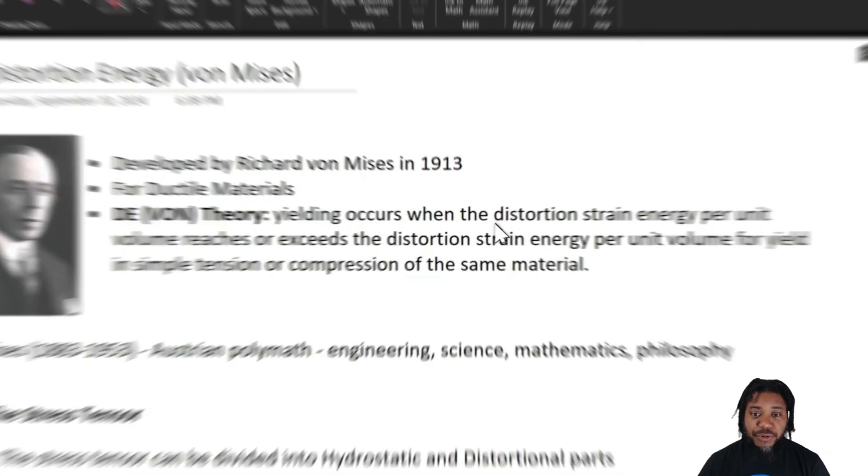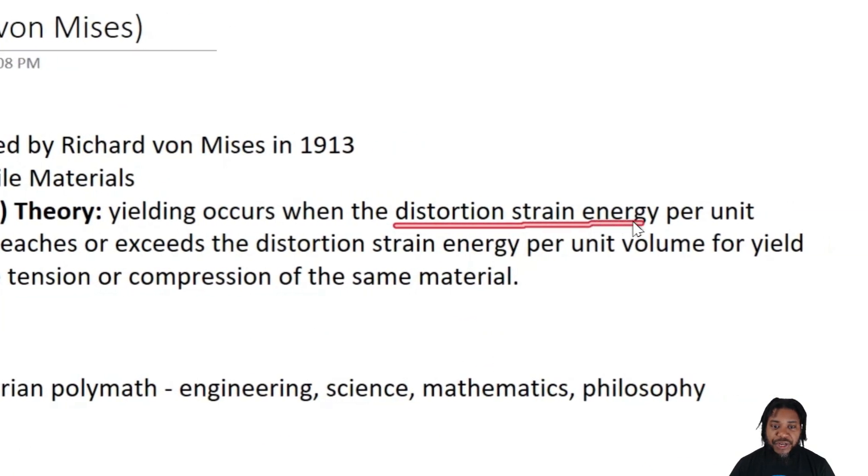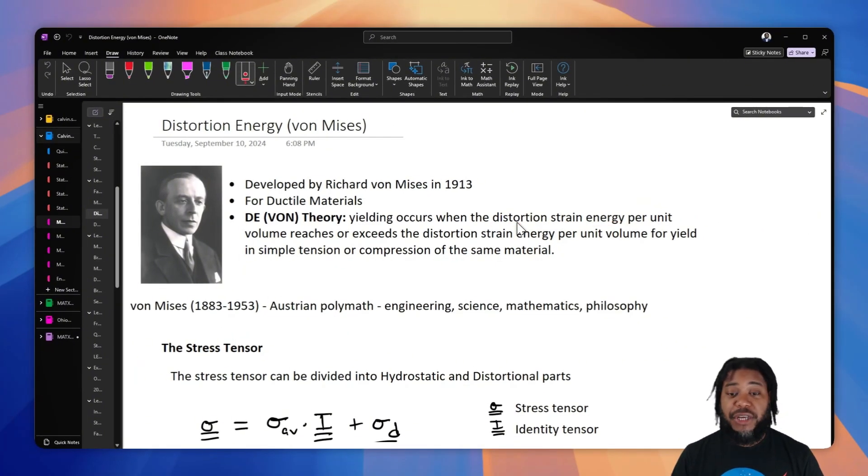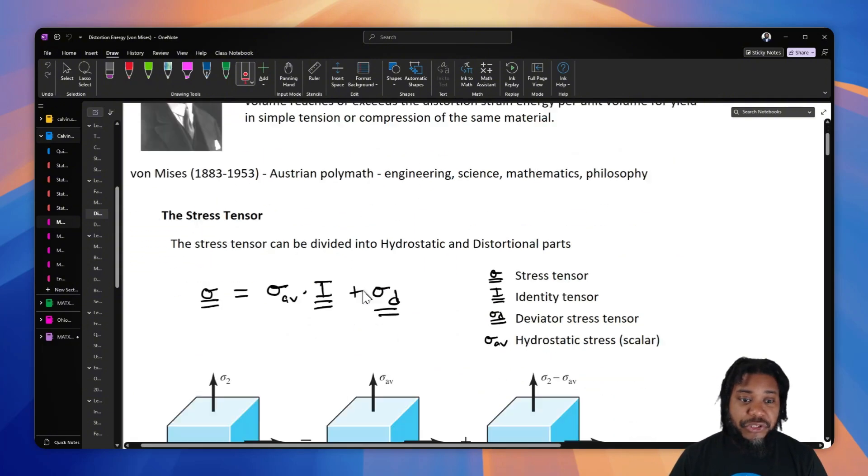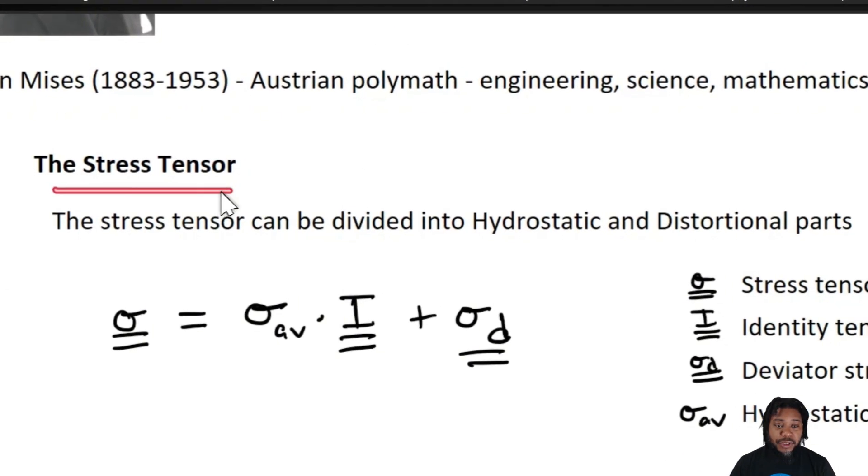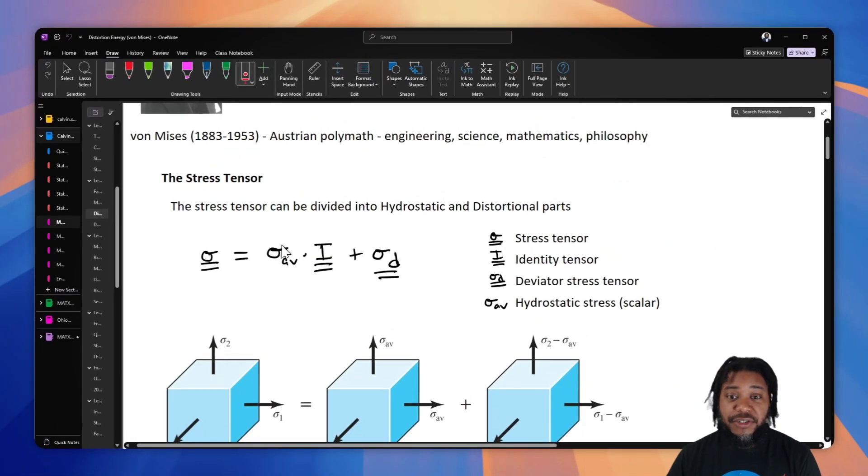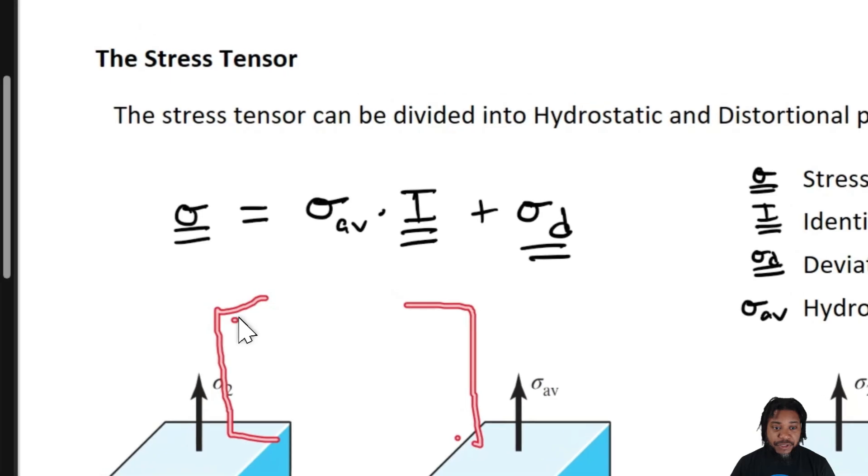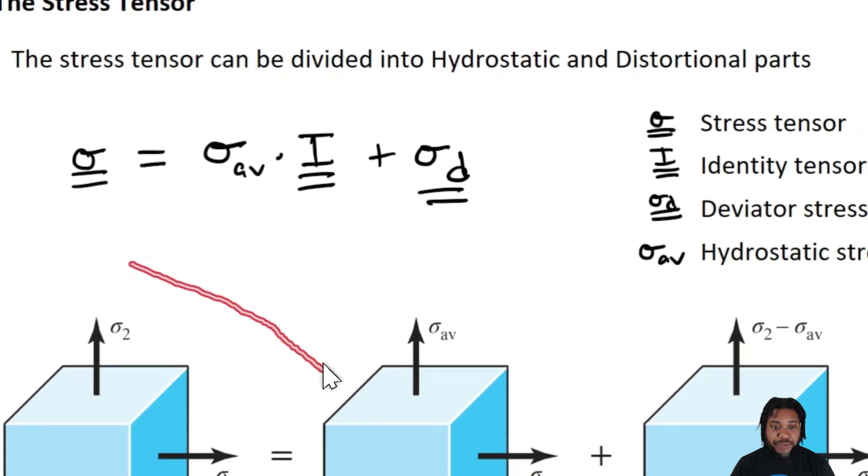So the heart of this theory is the distortion strain energy. Now let's try to do some derivations and understand what strain energy is and what is the distortion strain energy within a unit volume. To get there, let's start with the stress tensor. We know that stress exists as a tensor, a matrix that consists of six terms, the diagonal which is normal stress and the off diagonals which are shear stresses.